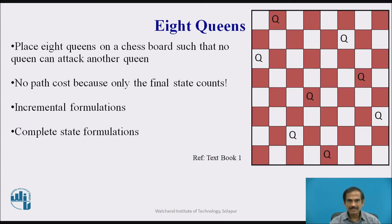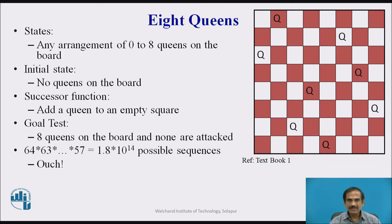The next problem is the 8-queens problem. We place 8 queens on a chess board such that no queen can attack another. The queens must be apart from each other, and path cost does not matter — only the final state counts. We have incremental formulations and complete state formulations. The states are arrangements of 0 to 8 queens on the board, where 0 means no queens and 8 means all queens are placed.